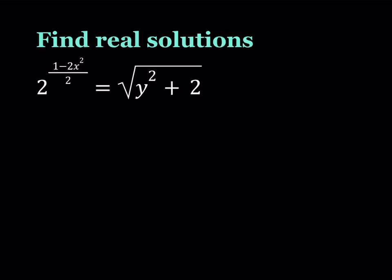Now we're going to be finding the real solutions of this equation, but this equation is non-standard. Why? Because we have an exponential on the left hand side and a radical on the right hand side. We also have 2 variables, x and y, but we only have 1 equation, and we're not looking for integer solutions. So this is a non-standard type of equation, so we need to use a non-standard method.